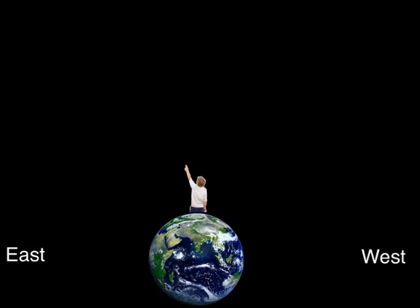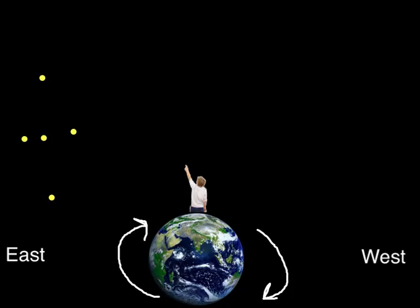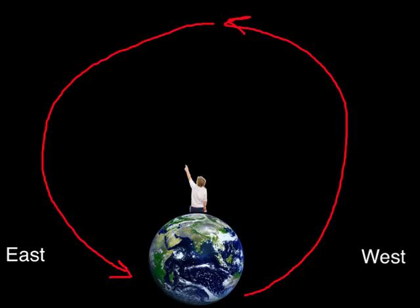The stars appear to move through the night sky in two different ways. The first is due to the Earth's rotation — how long it takes the Earth to spin around its axis. This causes stars to appear to rise in the east, slowly move towards the western sky throughout the night, and finally disappear. This is all due to the Earth's rotation. Another way that the stars appear to move is due to the Earth's orbit around the Sun — the Earth goes around in 365 days.